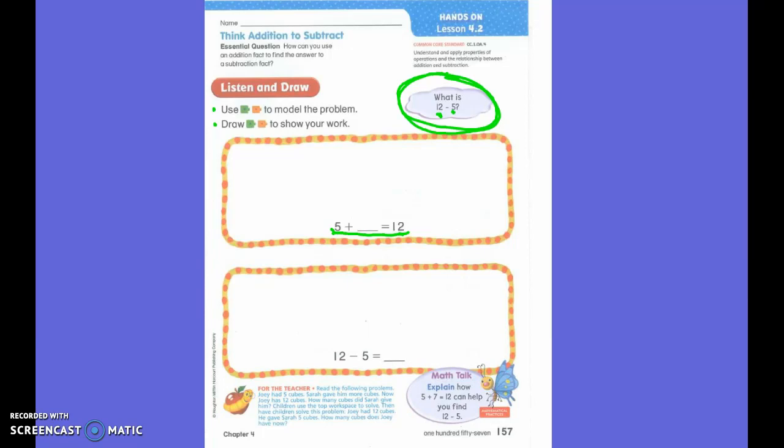But when I add, where does my biggest number go? It goes last, very good job. So all I have to do is put my bigger number last, and then I can put my 5 in any of the add-in spots. It doesn't matter.